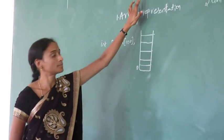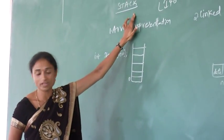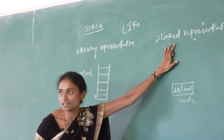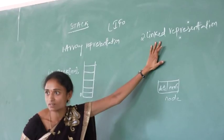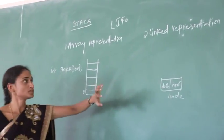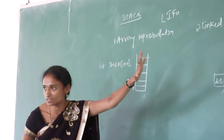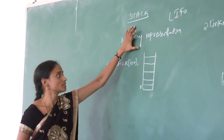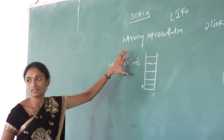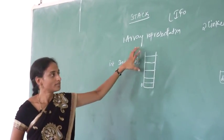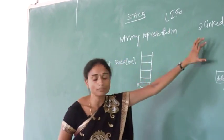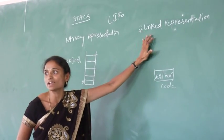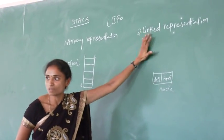The stack can be represented in two ways: one is array representation, another one is linked representation. The major difference between array and linked representation is that in array representation, a fixed array is allocated memory space, whereas in linked representation, we are allocating memory dynamically at run time.